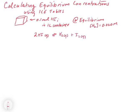We're going to take some of that HI gas and start with 0.1 moles of HI in a 1-liter container. So already I can tell that my concentration of HI initial is going to equal 0.10 moles divided by 1 liter, which equals 0.10 molar.